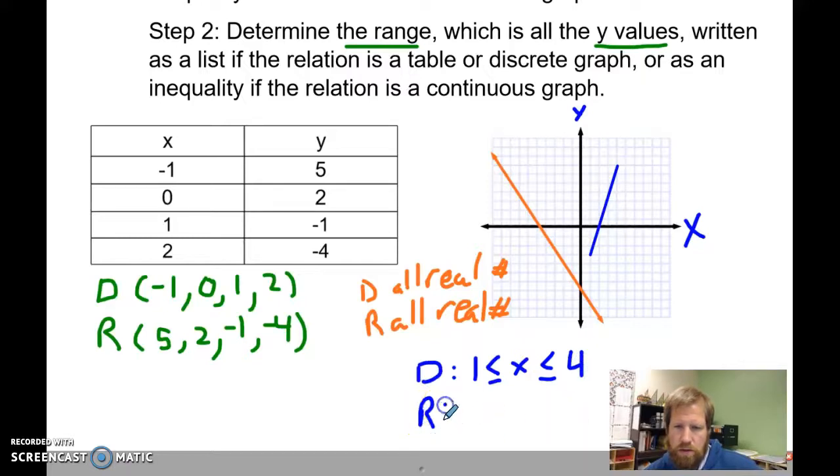My range, same idea. My y value, my lowest one, looks like it's at negative 3. So negative 3 is less than or equal to y, which is less than or equal to 7. So that would be my domain and my range for this line segment.